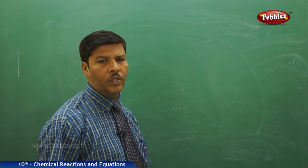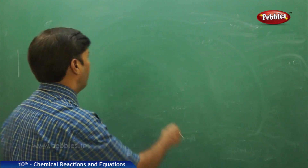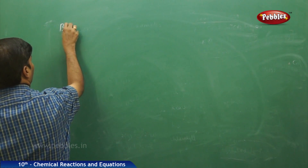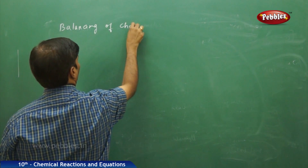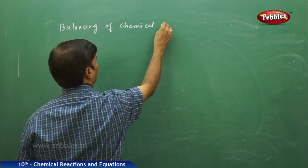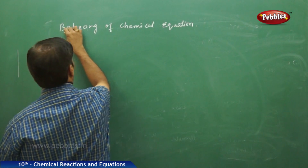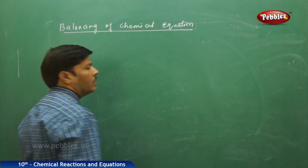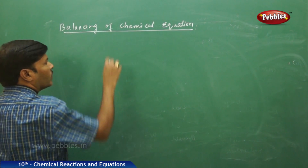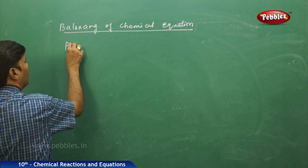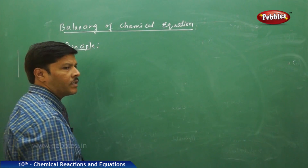Next part of the discussion is a continuation of chemical equations. Now we are going to study something about the balancing of chemical equations. Before going to balancing, we should study on what basis a chemical equation is actually balanced.